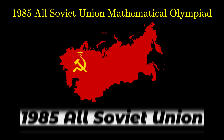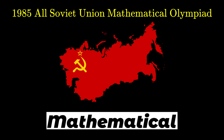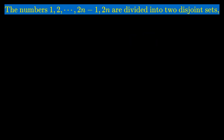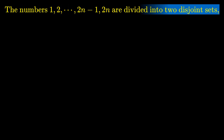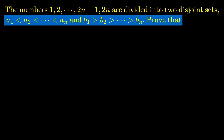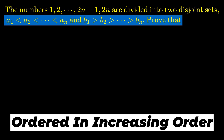Let's prove an identity from the 1985 All-Soviet Union Mathematical Olympiad. We have the numbers 1, 2, up to 2n minus 1, 2n, divided into two disjoint sets. The first set consists of the numbers a1, a2, up to an, ordered in increasing order.